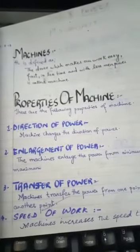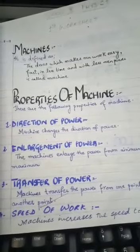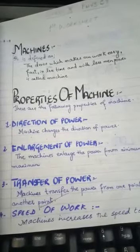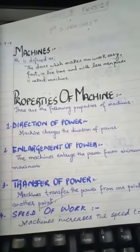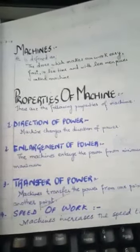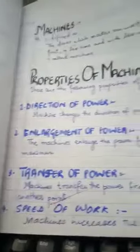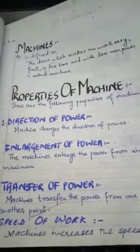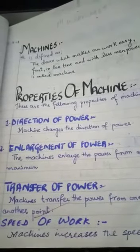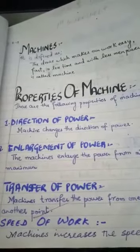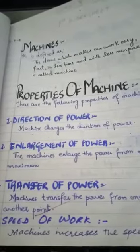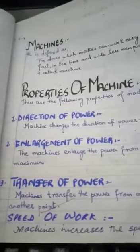So the main purpose of the machine is to change the direction of power. Like, by the help of pulley, we can lift bucket of water from well. We apply force in the downward direction, while bucket moves in the upward direction.